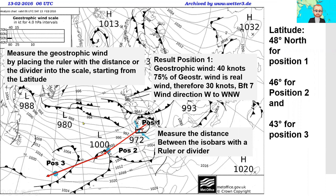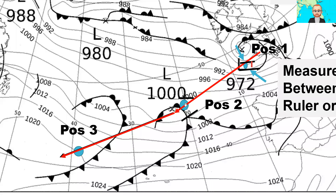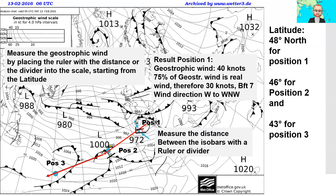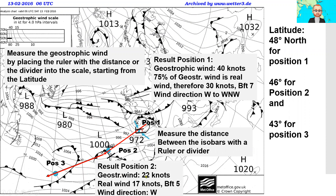The same we can do for position two. Again, I take the distance between the two isobars. We can already see that this distance is by far larger than at position one — meaning the wind speed will be less. After placing the measurement in the scale, the geostrophic wind at this position is 22 knots.